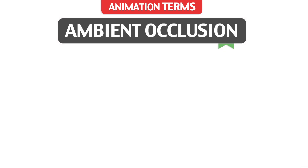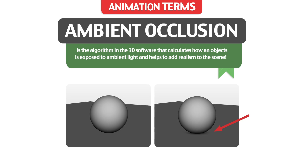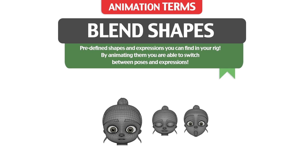Ambient Occlusion: it's the algorithm in the 3D software that calculates how an object is exposed to ambient light, and helps to add realism to the scene. Blend Shapes: predefined shapes and expressions you can find in your rig. Animating them, you are able to switch between poses and expressions.